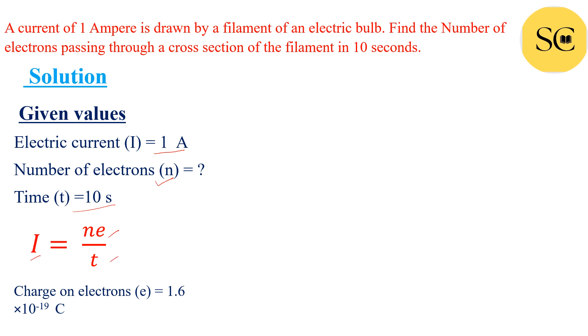So what is e? e is charge on electrons, 1.6 × 10^-19 coulombs.